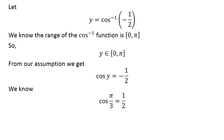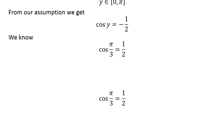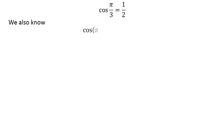We know cosine of pi upon 3 is equal to half. We also know the trigonometric identity cosine of pi minus x is equal to minus cosine of x.